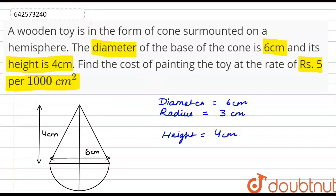We have to paint the toy, that is, we have to find the curved surface area. We know that the curved surface area of cone is πrl and the curved surface area of hemisphere is 2πr².